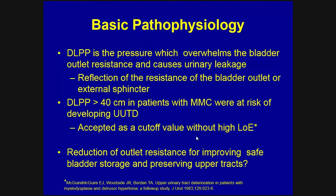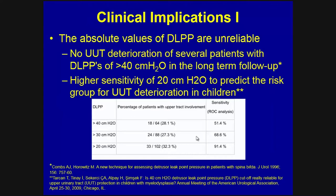In treatment policies, reduction of outlet resistance to improve safe bladder storage and preserve the upper tract is targeted. Finding an absolute value of LPP is very important, but there are not many studies that have investigated cutoff values. One study showed no upper urinary tract deterioration in many patients with LPPs of 40 centimeters of water in long-term follow-up. Another study in children showed that 20 centimeters of water as a cutoff value for LPP was better than 40 centimeters to predict the risk of upper urinary tract deterioration.